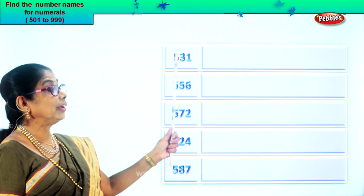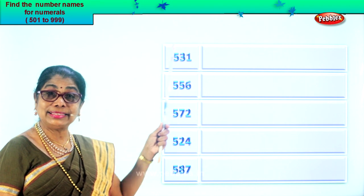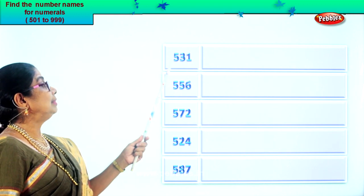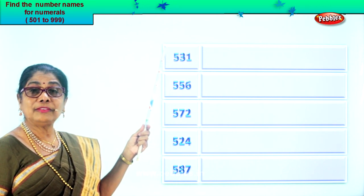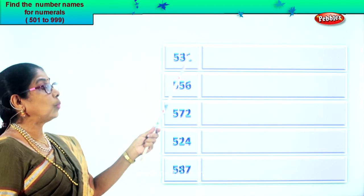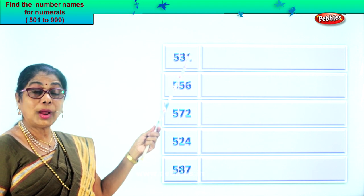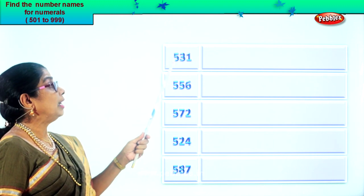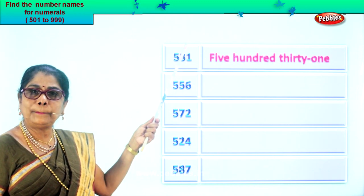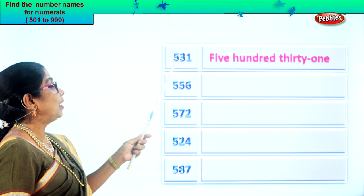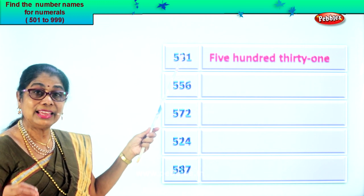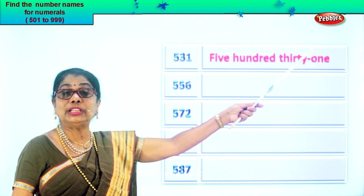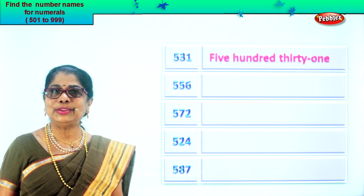We've got the numeral here. There are three numbers here. Numeral 531. One is in the ones place, three in the tens and five in the hundreds place. How will we read? Five hundred thirty-one. Just as we say it, you write it down. Five hundred — so we write five hundred. Thirty-one — you write thirty-one. We need to know only the spelling of thirty and hundred. That's it.